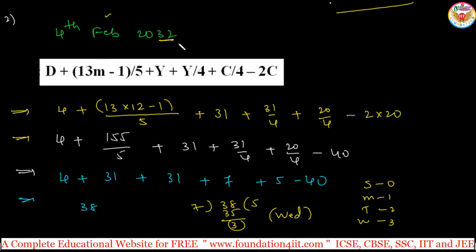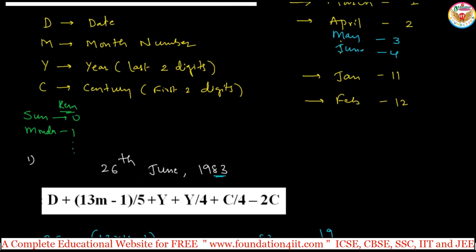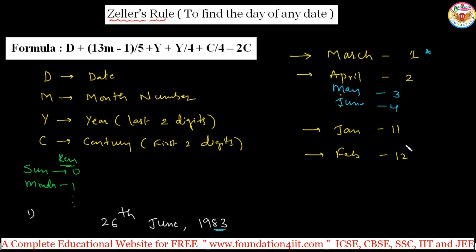So only two important things: remember the formula, and if it is January or February, subtract one from the year. The general rule starts from March — that's why January and February require subtracting one from the year. This formula is easy to remember and calculation is very fast — no need for separate century codes, year codes, or month codes. Just a little practice and you can answer any date-related question very fast, even in computer exams.